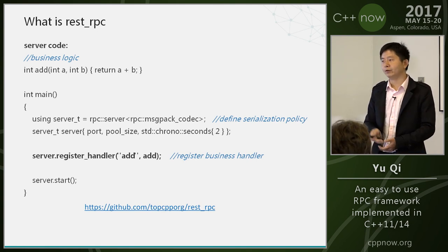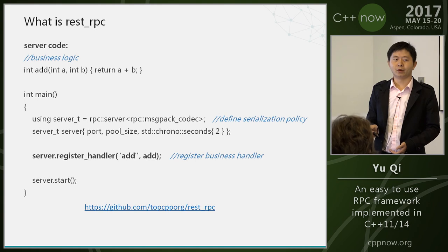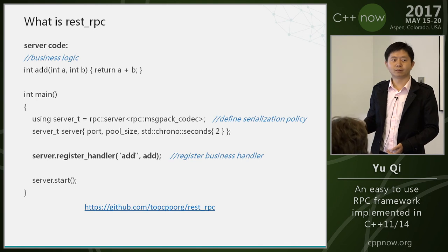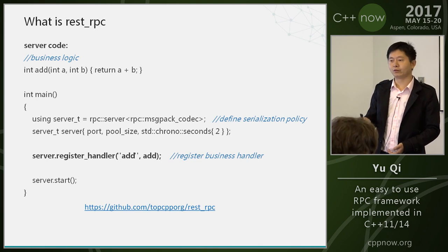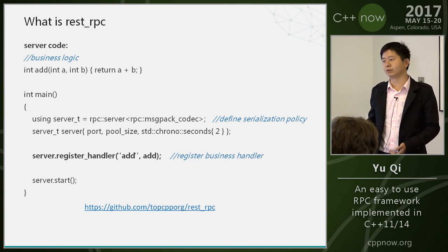Furthermore, REST-RPC is also very flexible. You can choose the serialization policy. REST-RPC can support different kinds of serialization — for example, JSON, XML, or custom serialization.